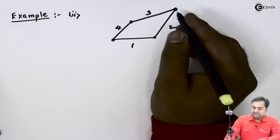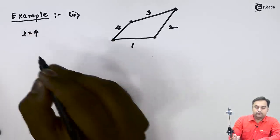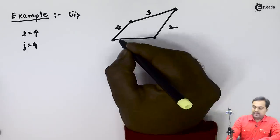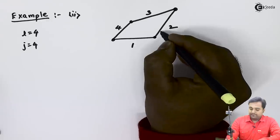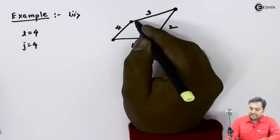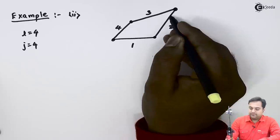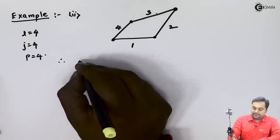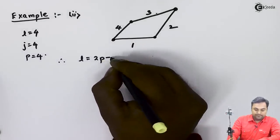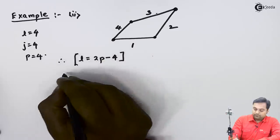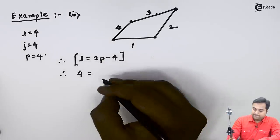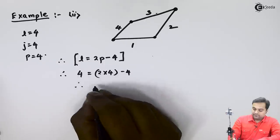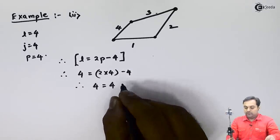In Example 2, we have a quadrilateral with four links, so L = 4, and four joints, so J = 4. The kinematic pairs are: between links 1 and 2, links 1 and 4, links 3 and 4, and links 2 and 3 — giving P = 4. Using the formula L = 2P − 4: 4 = 2(4) − 4, which gives 4 = 4. Left-hand side equals right-hand side.